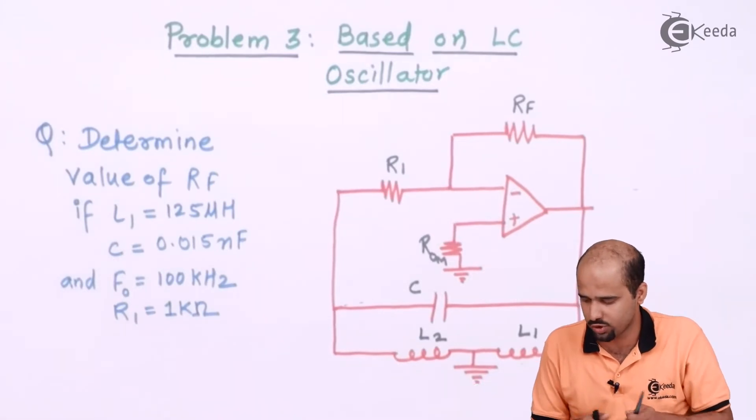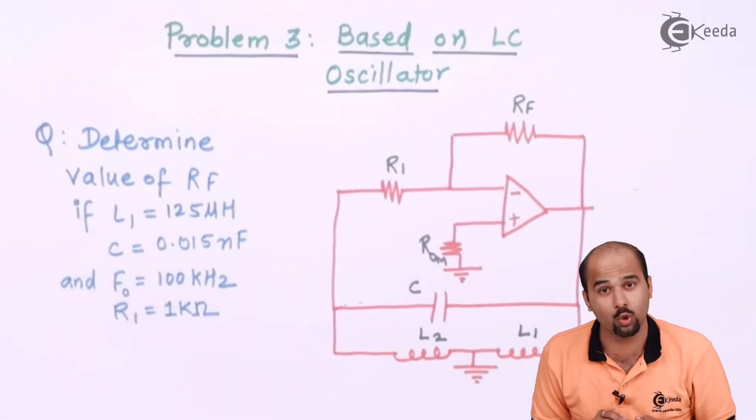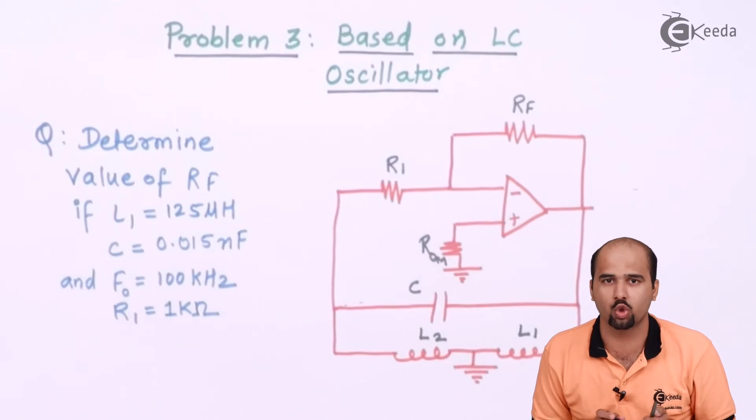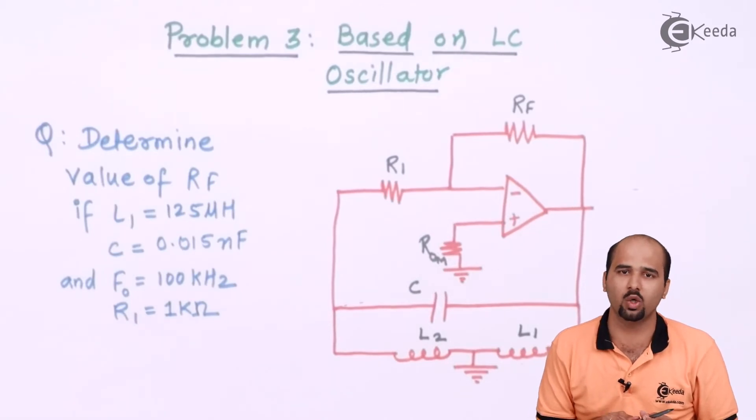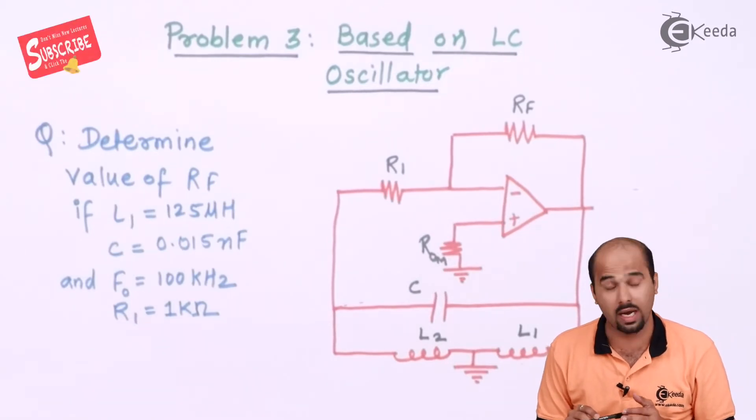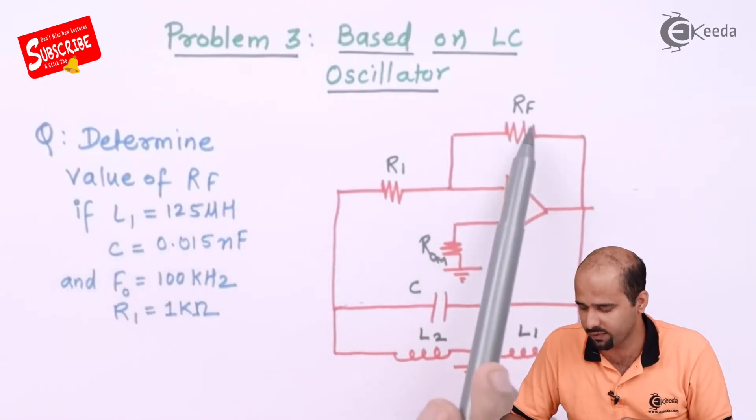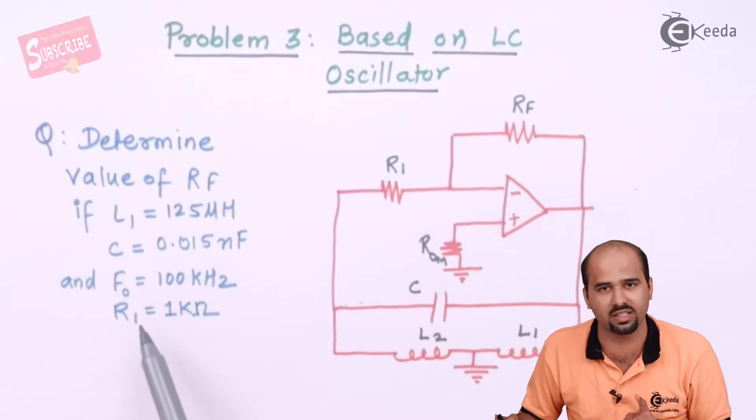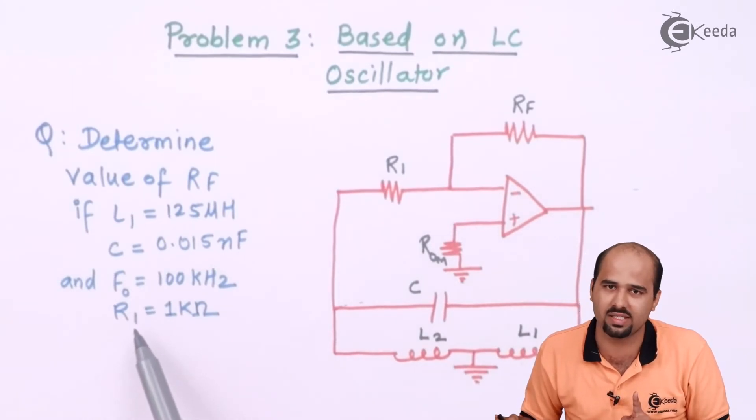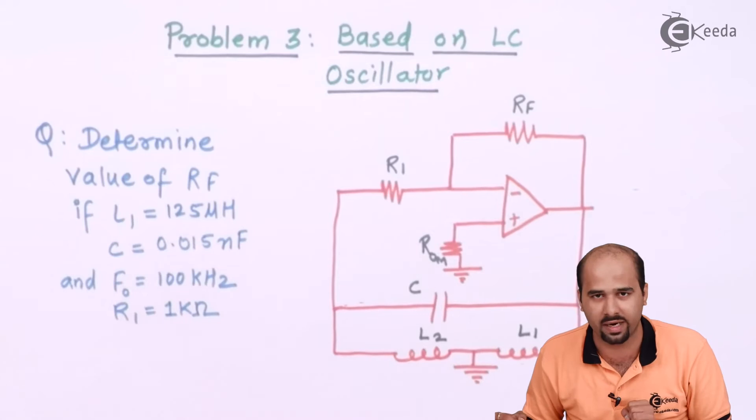First of all, you have to say that L1 is given, L2 is not given, right? So first of all, you have to find out the value of L2 because we will go in the reverse order. We want to find out RF, R1 is given, so if we get the value of gain, then we can easily find out the value of RF.